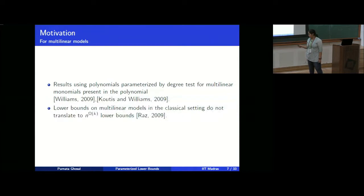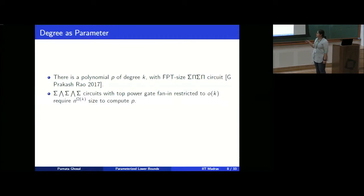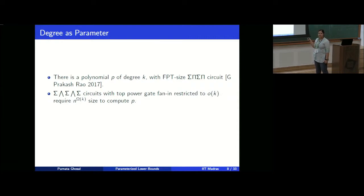We worked with degree as parameter. We defined a polynomial explicitly which is of degree k and can be computed efficiently — it has FPT-sized depth-4 circuits. This was joint work with Om Prakash and Raghavendra Rao. Every product gate fan-in is bounded by k because the polynomial is of degree k. By using Fisher's identity we get an equivalent depth-5 powering circuit from this depth-4 circuit, where the power gate fan-in equals the product gate fan-in. So the equivalent depth-5 powering circuit has power gate fan-in bounded by k.